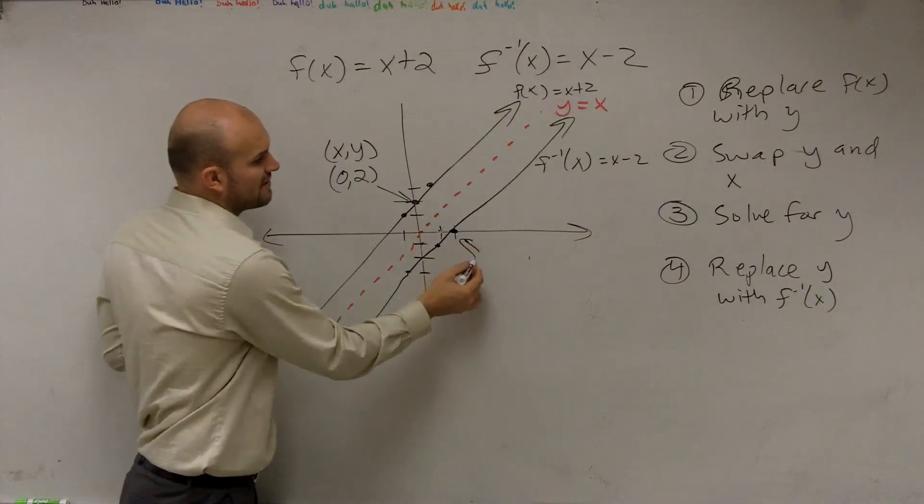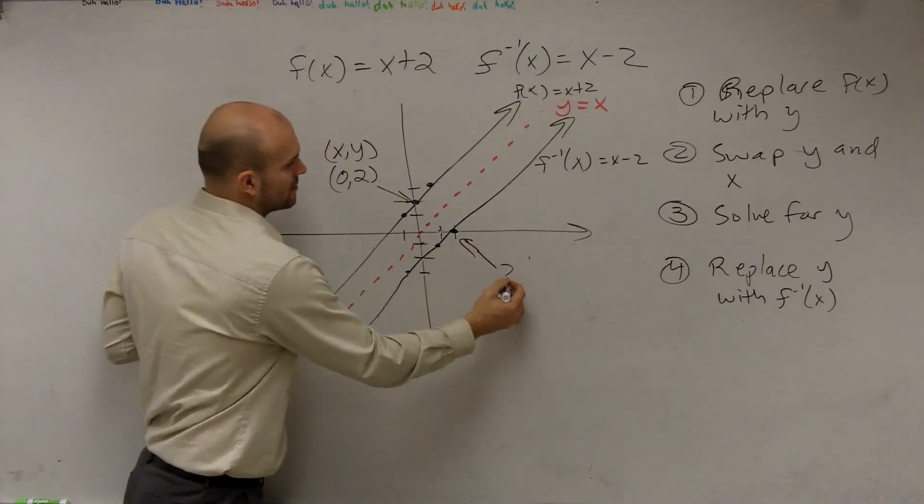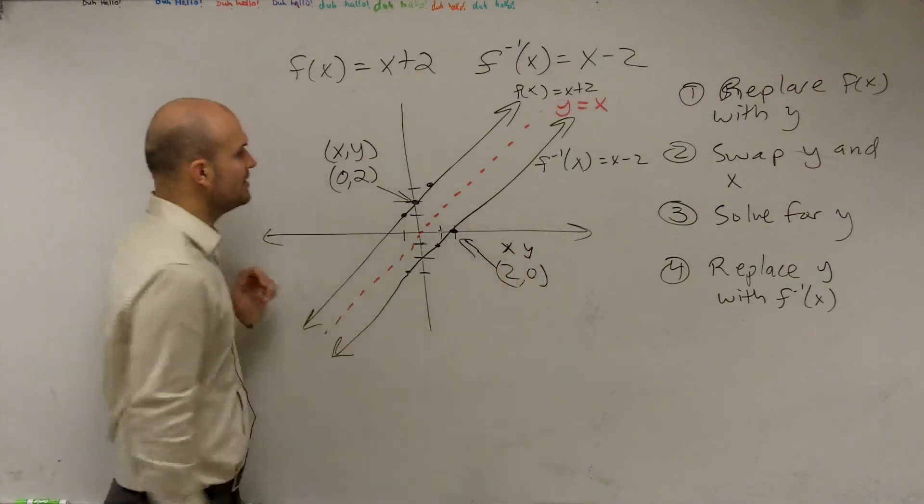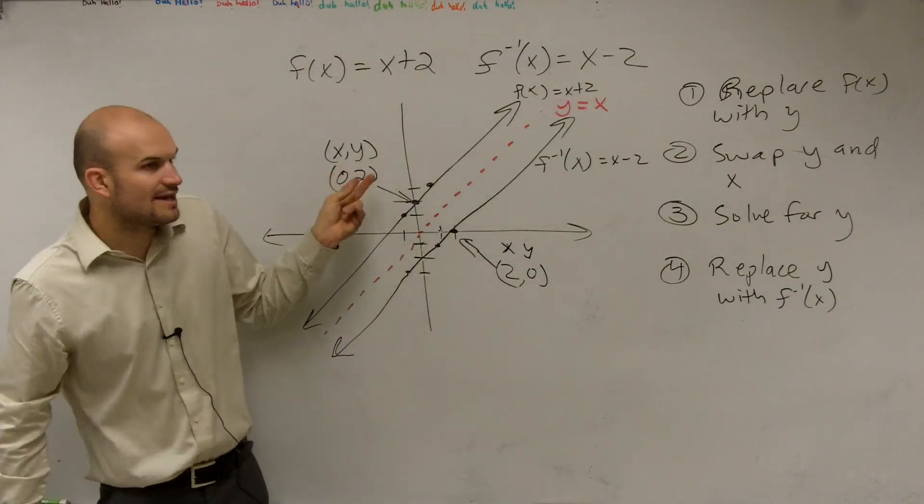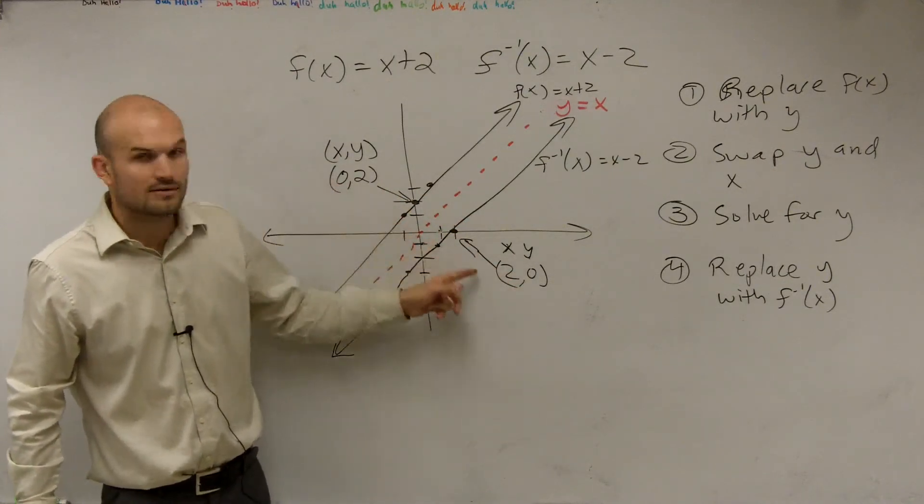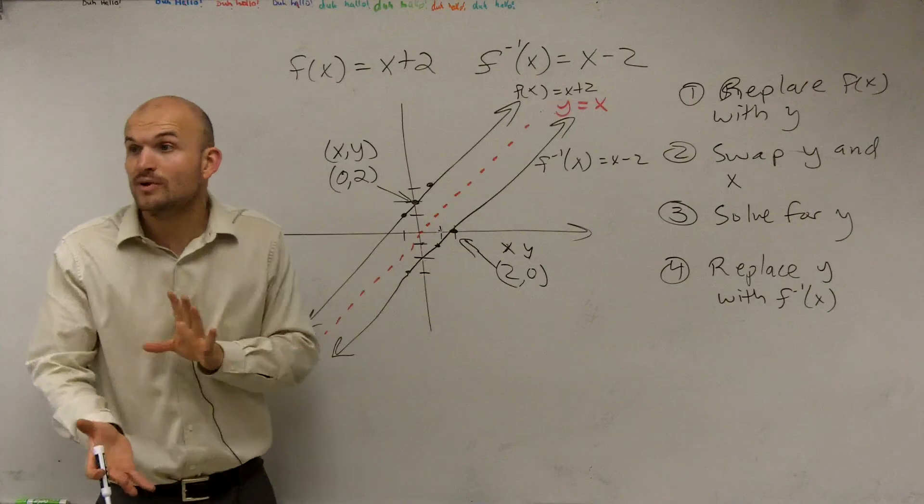if you notice on f inverse of x, what is this point? 2 comma 0. So what do you guys notice about f of x compared to f inverse of x of their coordinate points? Yeah, they're switched.